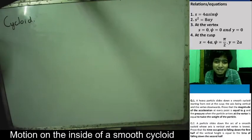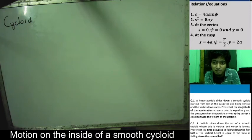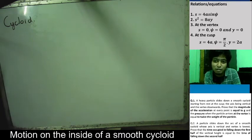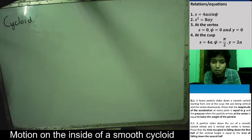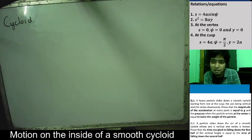Today we will be discussing the motion on the inside of a smooth cycloid. In previous classes we have seen how to resolve accelerations — particularly radial, transverse, tangential, and normal accelerations, and how to solve problems involving those. Here we will study motion on the inside of a smooth cycloid using those accelerations, because motion is all about acceleration, velocity, distance, and time.